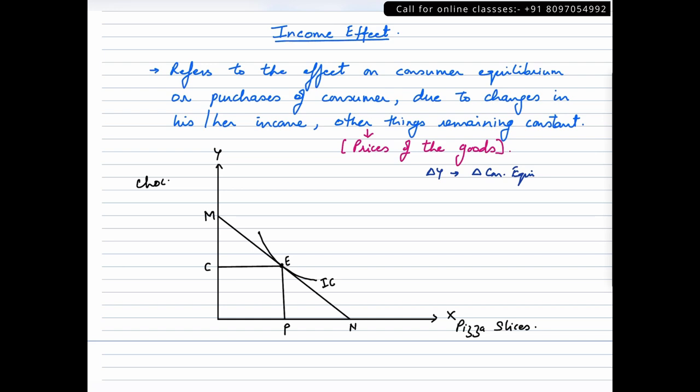Okay, so let us assume the income of the consumer increases. As the consumer's income increases, his ability to spend or to purchase will go up. That means his budget will increase, right? And when the budget increases, the budget line will shift outwards. Let us draw the budget line - the new budget line. Let us say this is our new budget line, let's call it as M1, N1.